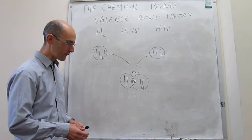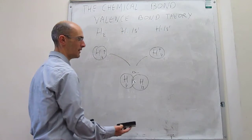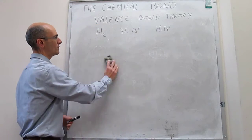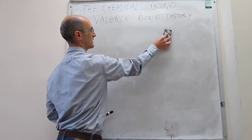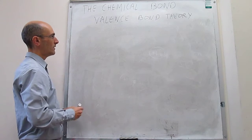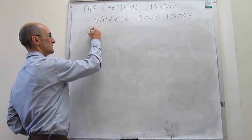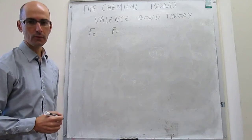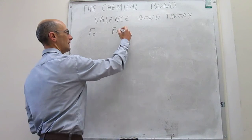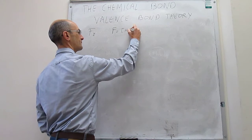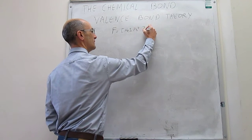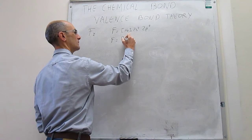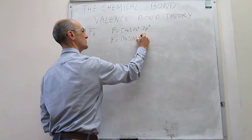Now let's move on to F₂ and see how that molecule is represented in a valence bond theory diagram. For F₂, the first thing is to write the electronic configurations. Looking at the periodic table, each fluorine atom has the configuration [He] 2s² 2p⁵.